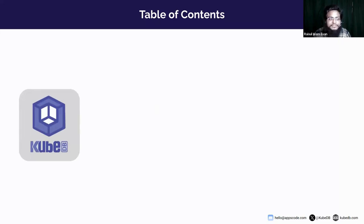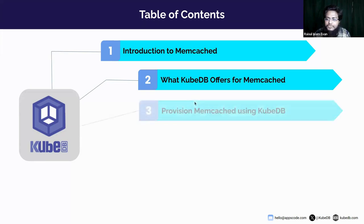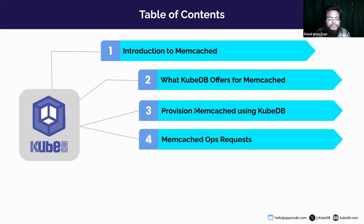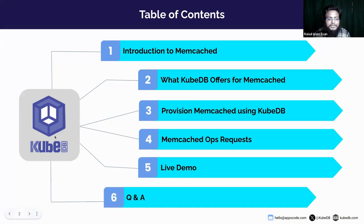In the table of contents, we will first talk about Memcached — what it is, why people use it, and what it offers. Then we will jump into KubeDB-managed Memcached, discussing why you should use it and what KubeDB does for your Memcached database. We will then cover provisioning Memcached using KubeDB, introduce Memcached OpsRequest and its basic workflow, go into a live demo session, and finally have a Q&A session.